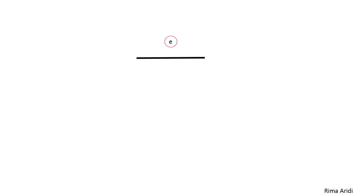For example, here we have element E. The beginning point is node 1 and the second point is node 2. These nodes are called local coordinates because they are within the same element. Here the element is a linear approximation, and for this reason we have just two nodes.